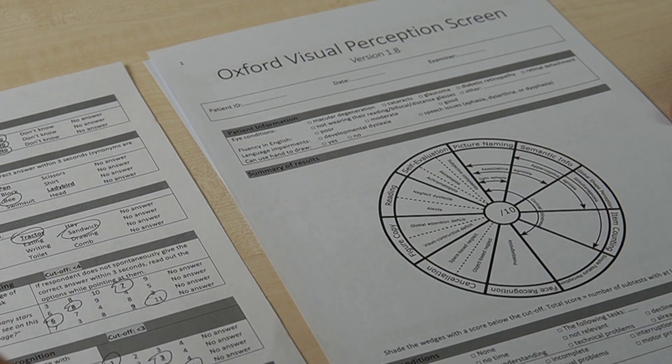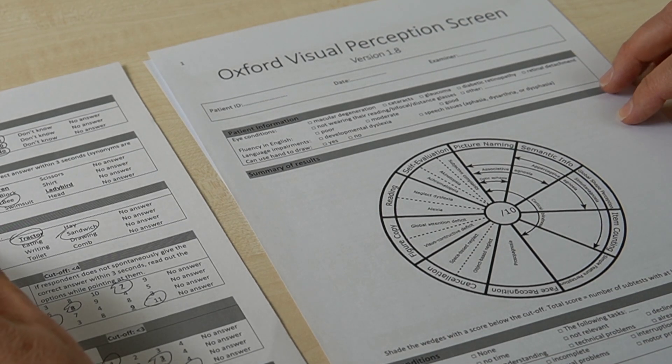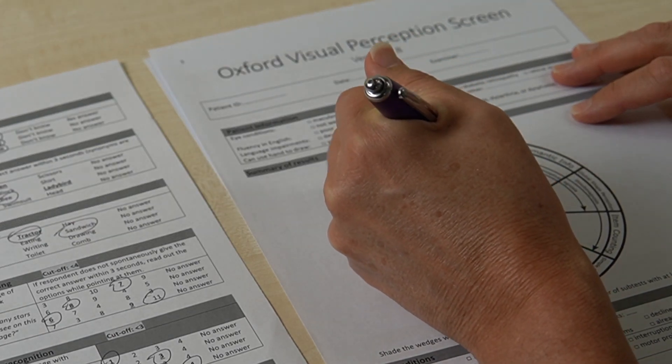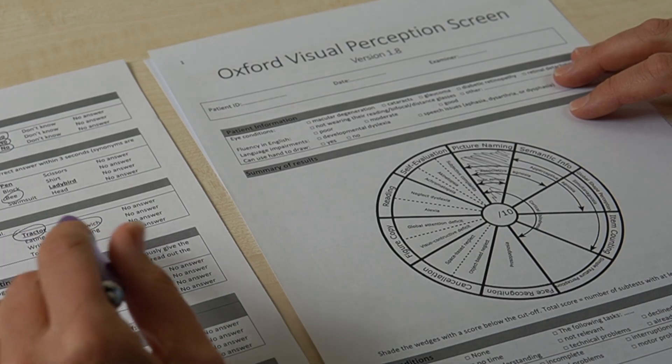Then if we look on the right side of the wheel, you can see that there are lots of errors there. So here there is no one-to-one relationship between a task and a condition, but we look at the profile scores. So if, for instance, someone fails on the first two tasks, and you've shaded the wedge for picture naming and the wedge for semantic information, you can see that that corresponds to the arrow that says associative agnosia. So that person shows signs of associative agnosia and less so of the other conditions on that side, like aperceptive agnosia or simultaneous agnosia, for instance.